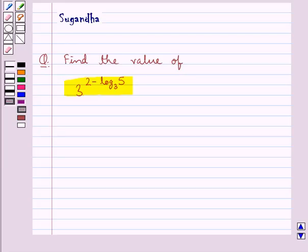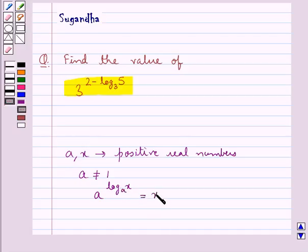Before moving on to the solution let's discuss one theorem in which we have a and x are the positive real numbers such that a is not equal to 1. Then we have a to the power of log x to the base a is equal to x.